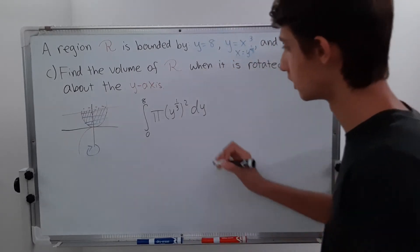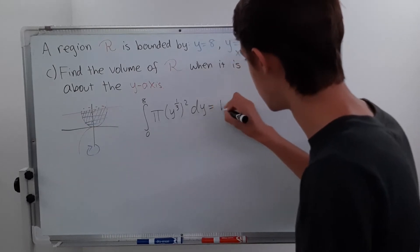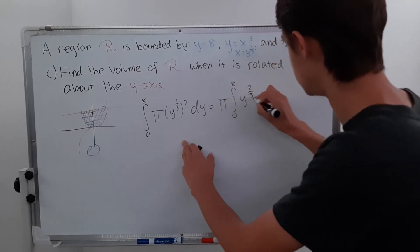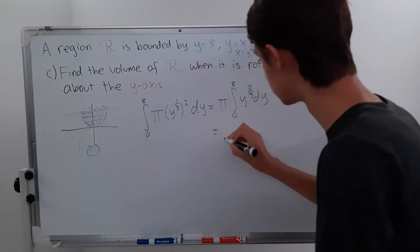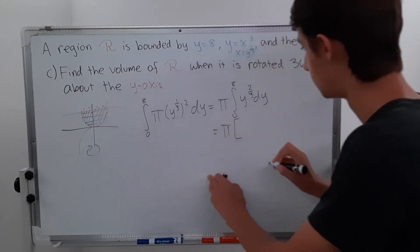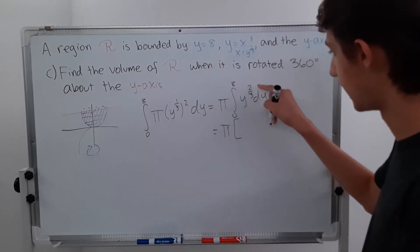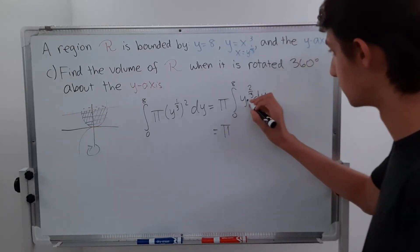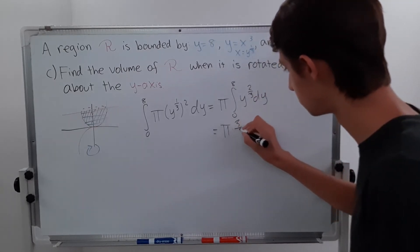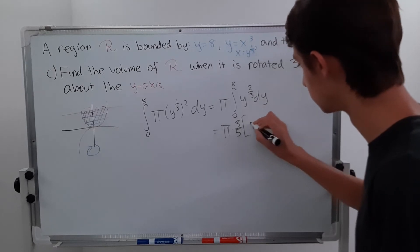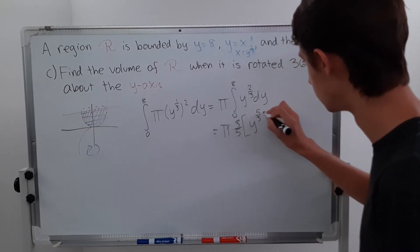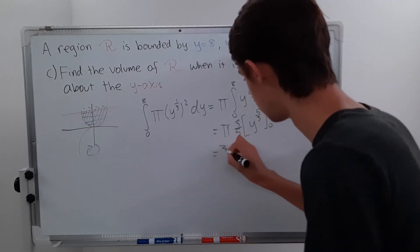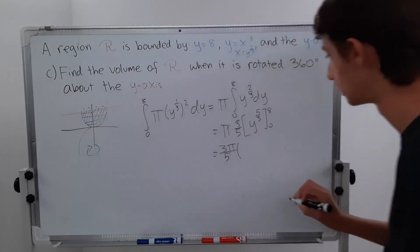This is pretty easy to solve. We can move the pi out since it's a constant. So this is pi times the integral from 0 to 8 of y to the 2/3 dy. That gives us pi times y to the 5/3 divided by 5/3, which is the same as multiplying by 3/5. So we have (3/5) y to the 5/3, evaluated from 0 to 8.